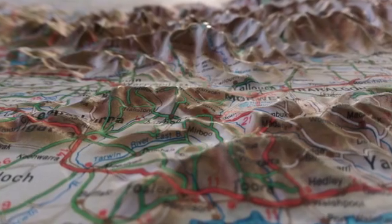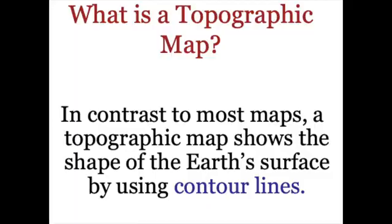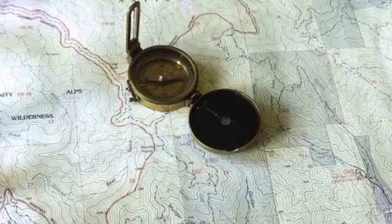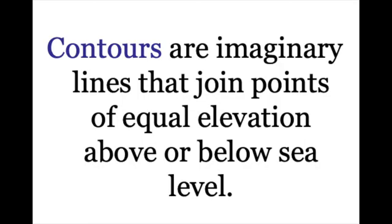In the past, maybe you've seen contour maps that are sort of bumpy like this one. But in contrast, contour maps use lines and they use the closeness of the lines to show elevation. Contours are imaginary lines that join points of equal elevation above or below sea level.